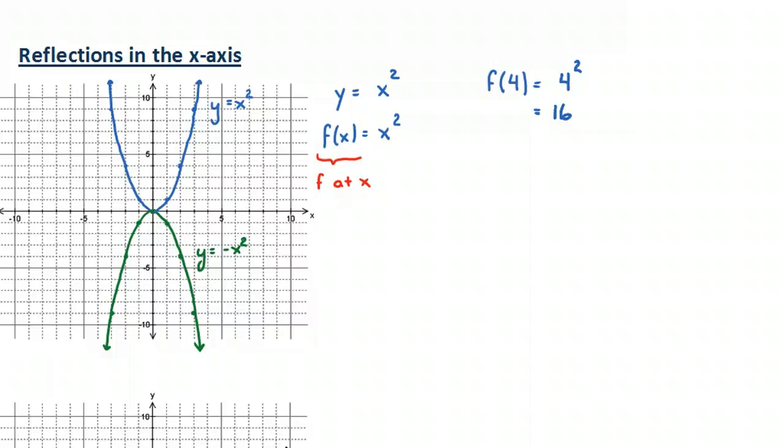So to continue on with what I was saying before, we said the blue curve is y equals x squared. We said that this is a quadratic function, so we can replace y with this new notation called f at x. F is the name of the function. So if down here we have y equals negative x squared, we can write this as y equals negative f at x. Because remember, we just said x squared is called f at x.